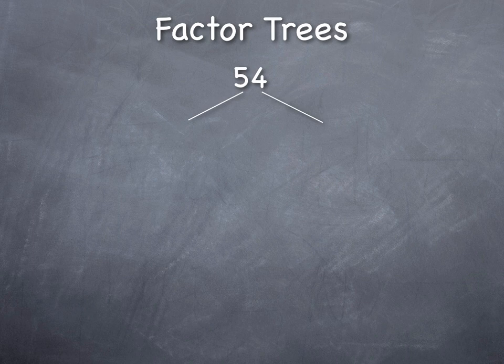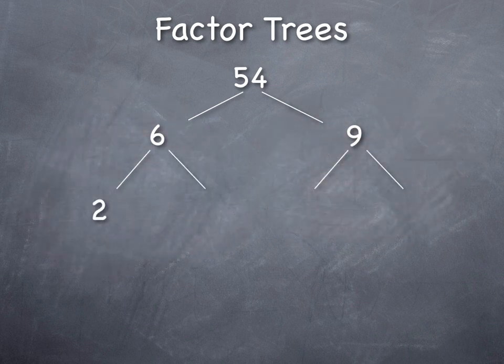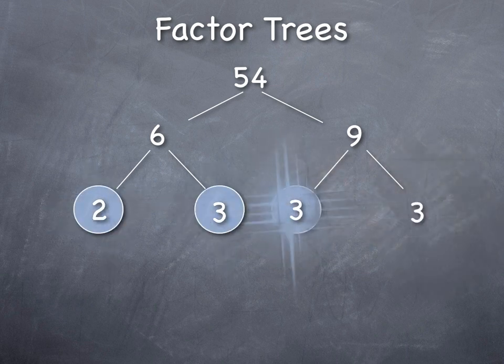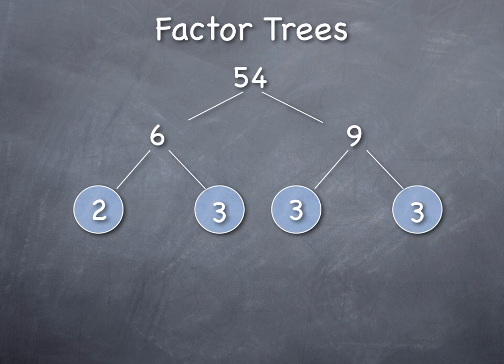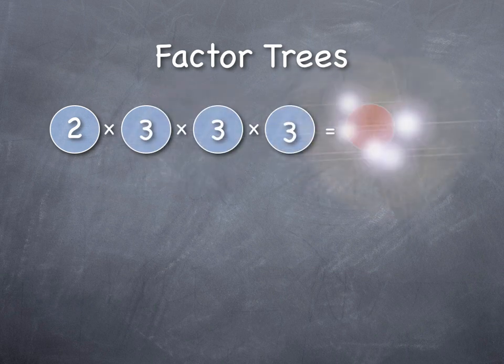And again, just as another practice, you don't have to start with the prime number of 2. You could do 6 times 9, break down your 6 into 2 times 3, and 9 into 3 times 3, and we end up with those same codes. So, it doesn't matter which path you use to get there, it's going to give you the same product of primes.